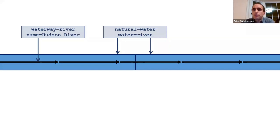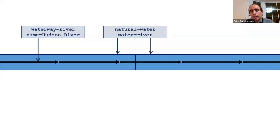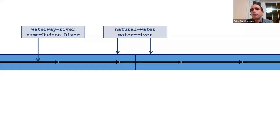Applying the name only to the waterway gives renderers a single feature to use for labeling. If you put the name tag on both the waterway and the river area, you could end up with double labeling — which looks silly. So the standard is to put the name only on the waterway and leave it off the river area.